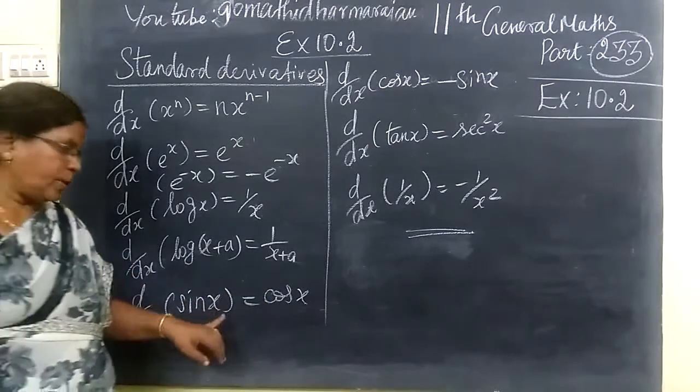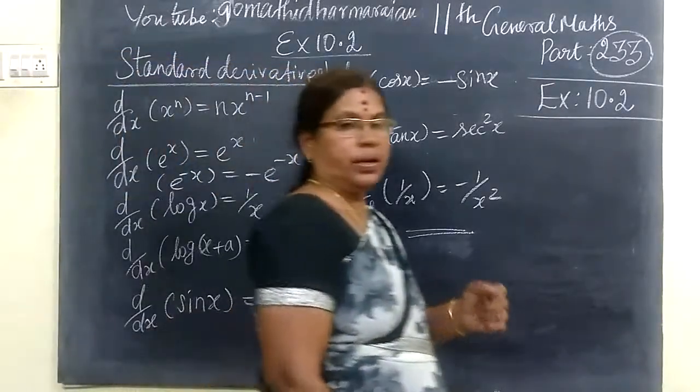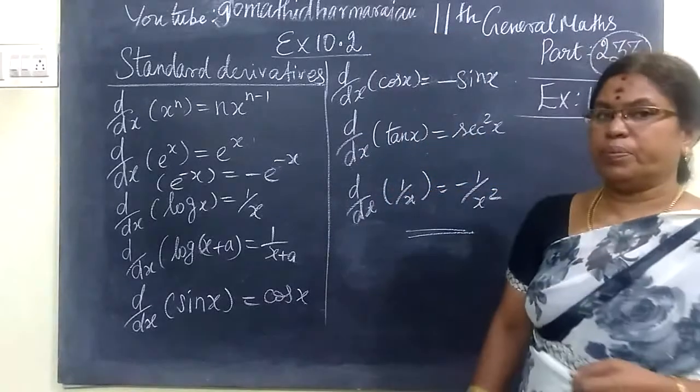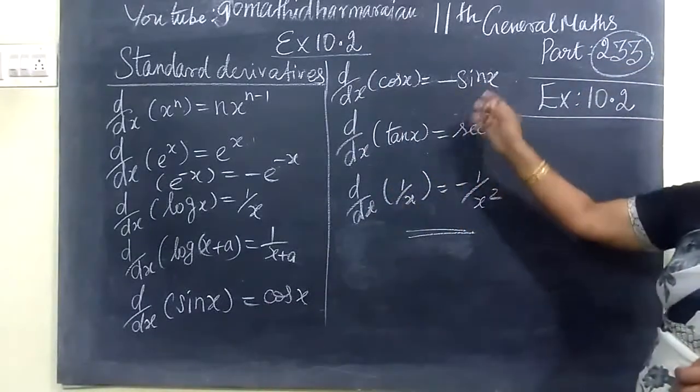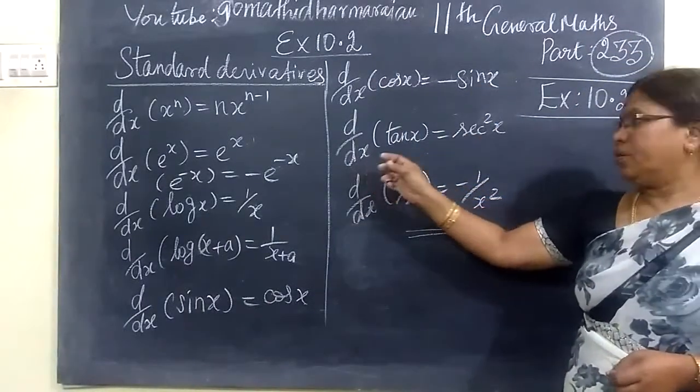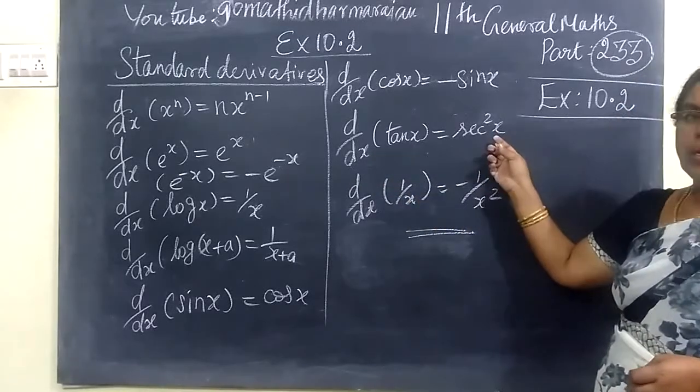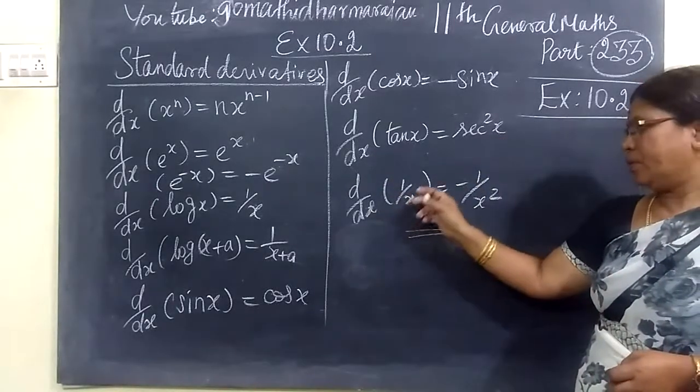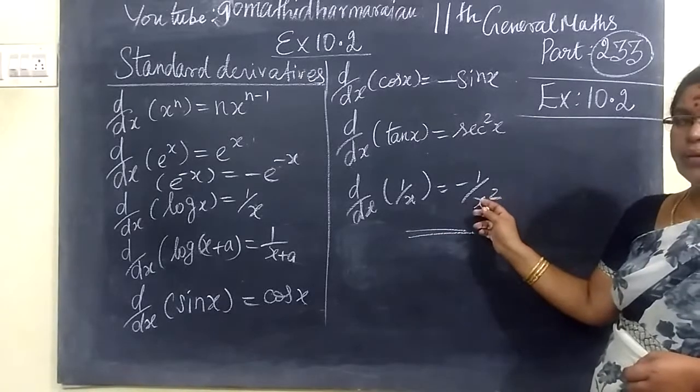d/dx of sin x is cos x. d/dx of cos x is -sin x. d/dx of tan x equals sec²x. d/dx of 1/x equals -1/x².